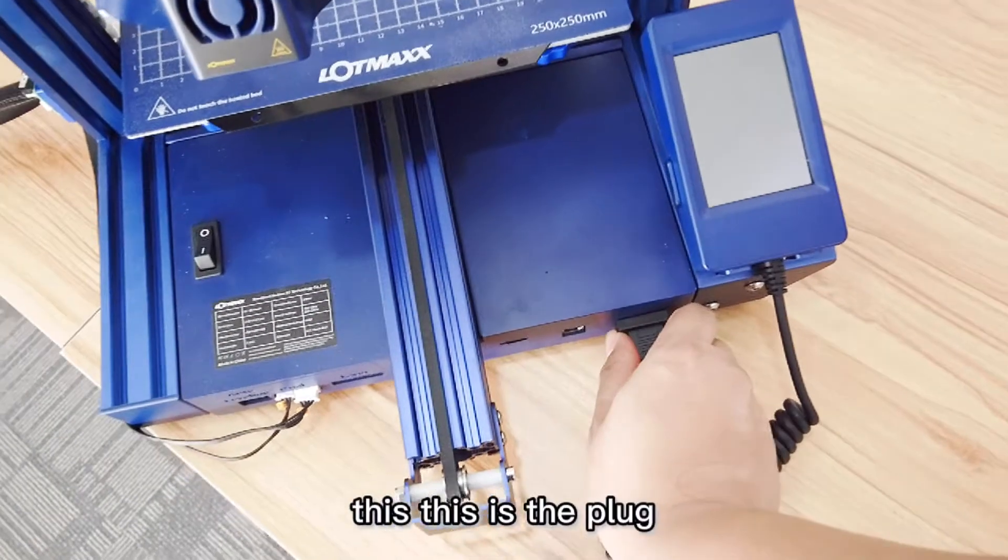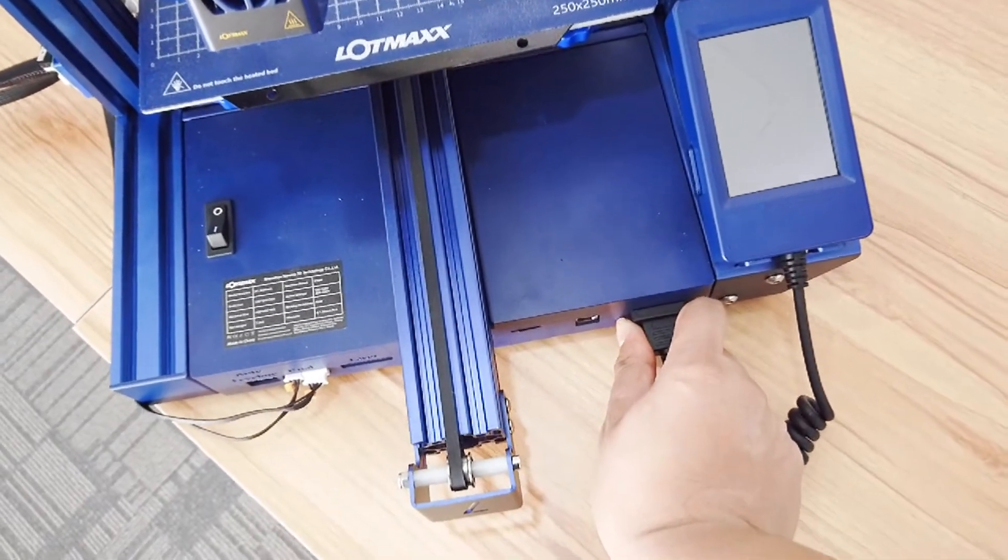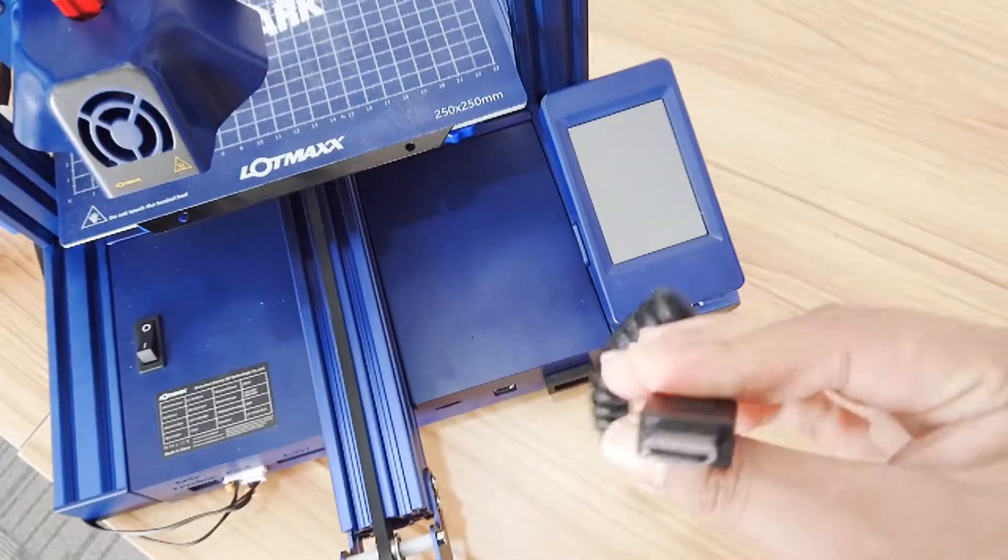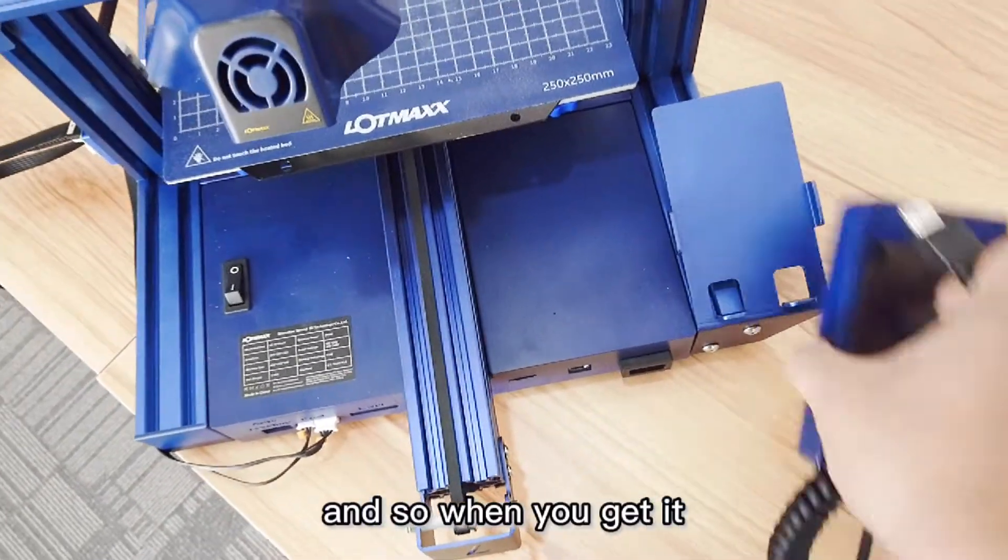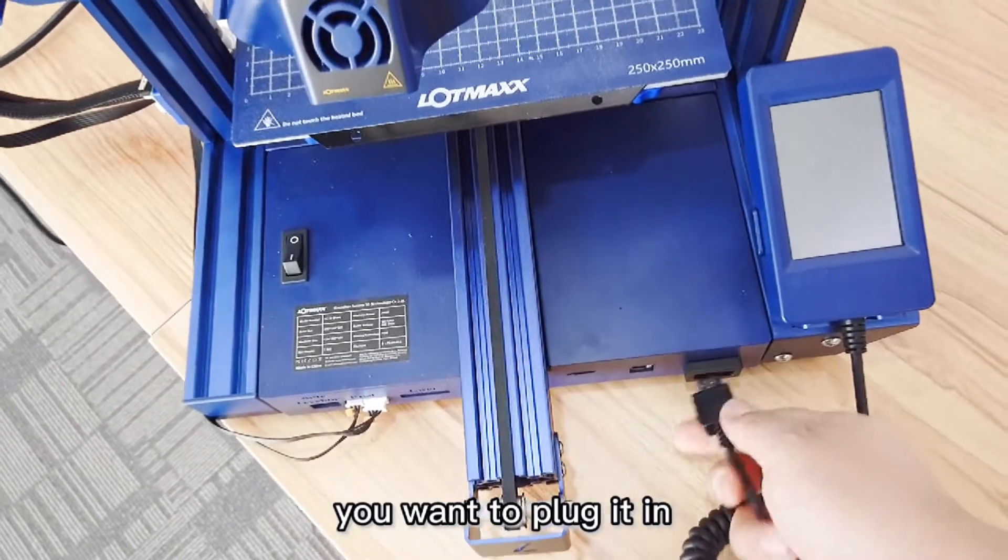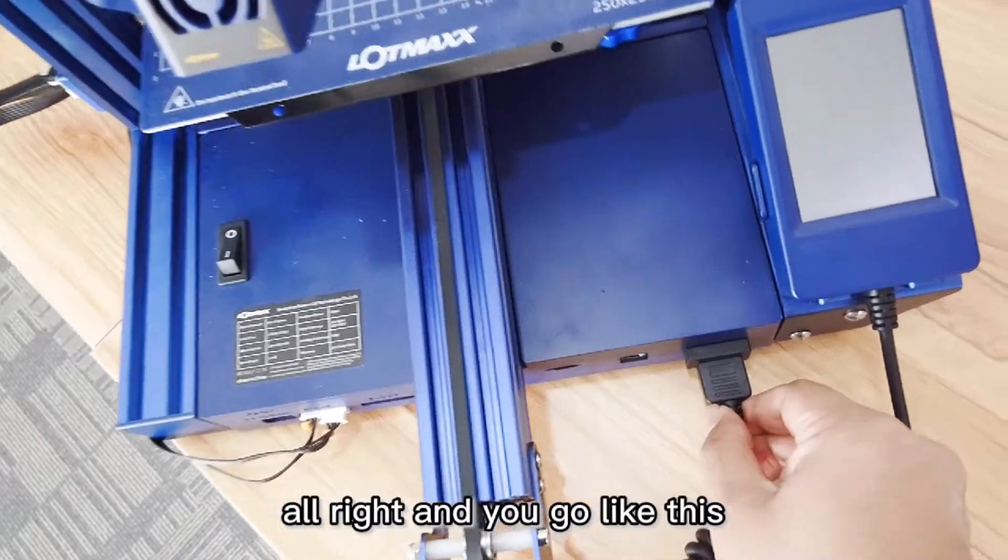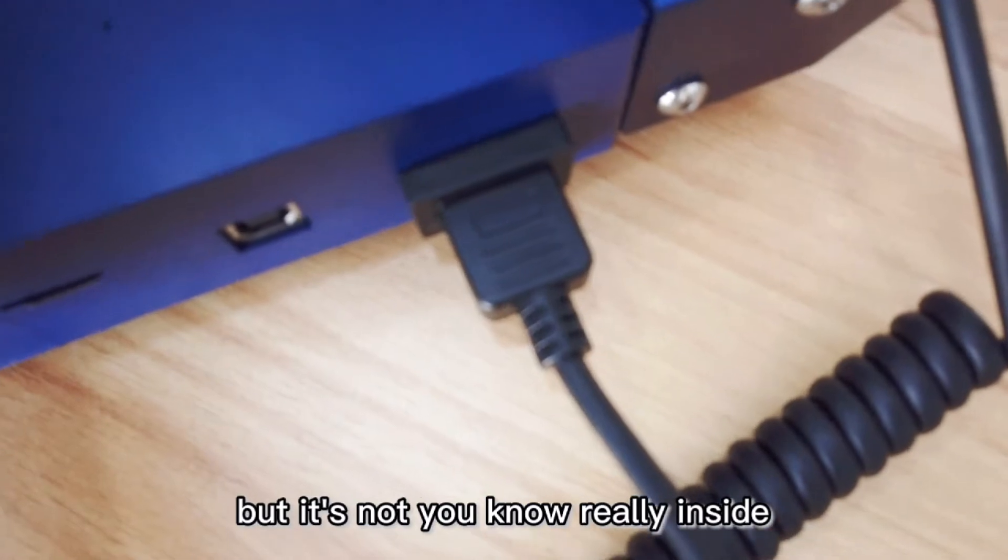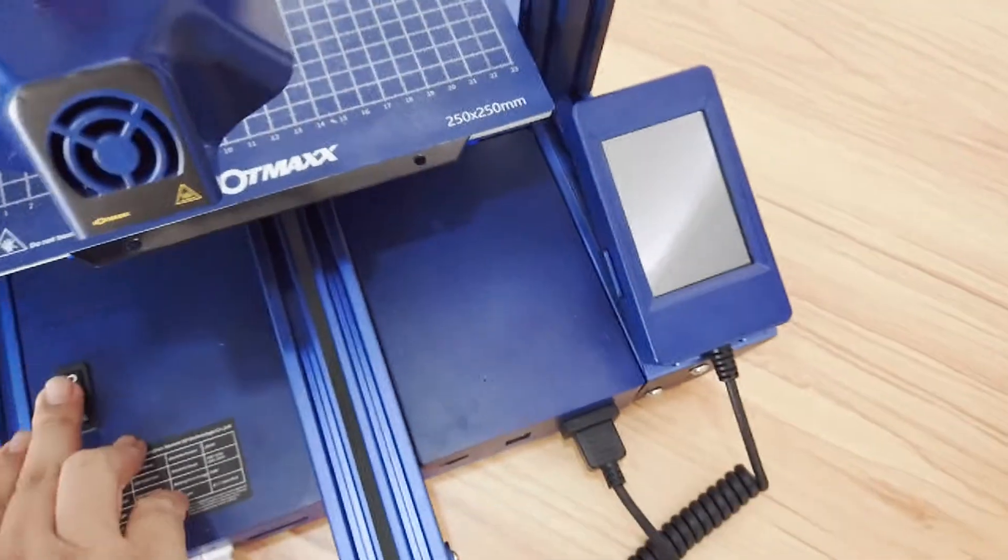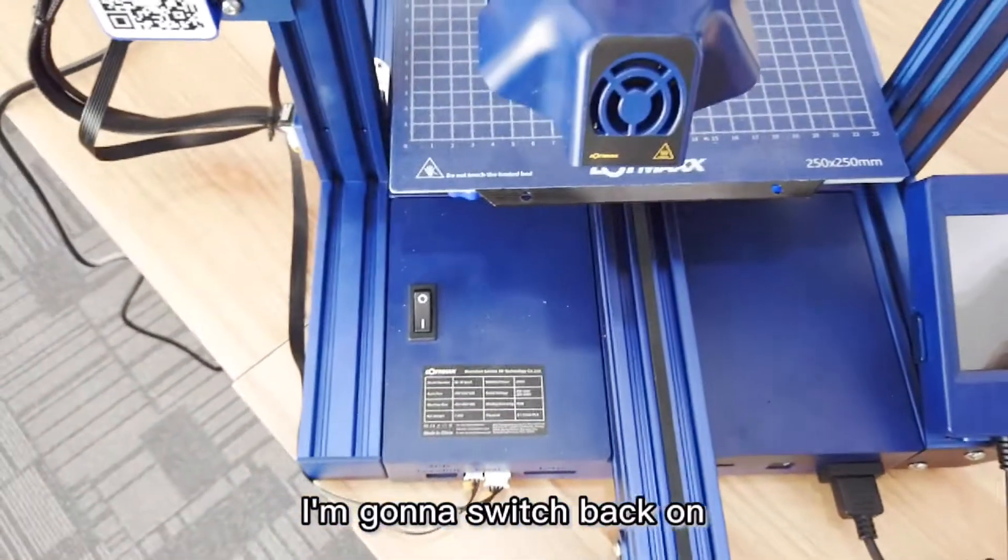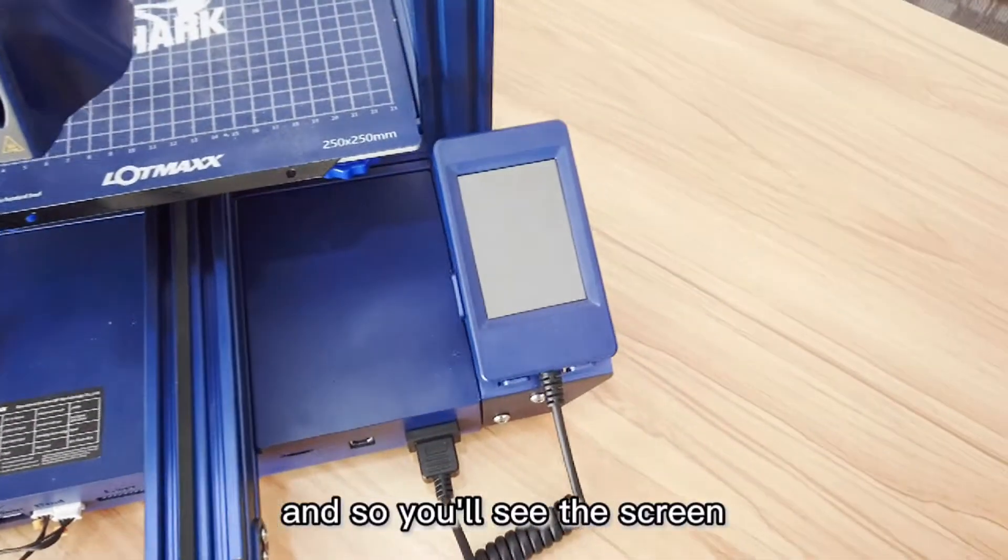Right now I'm gonna switch it off. The first thing is this, this is the plug. I'm gonna pull it out, as you can see this is HDMI. You want to plug it in but it's not really inside and you're gonna see some results like this. I'm gonna switch it back on and so you'll see the screen, nothing shows up right, it's black.